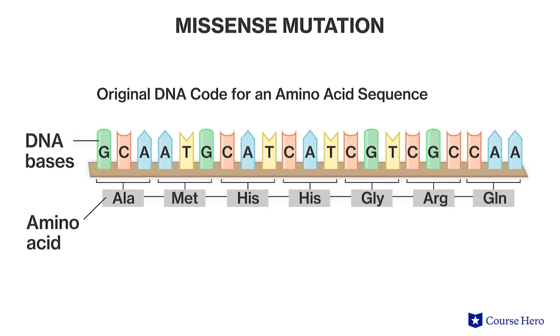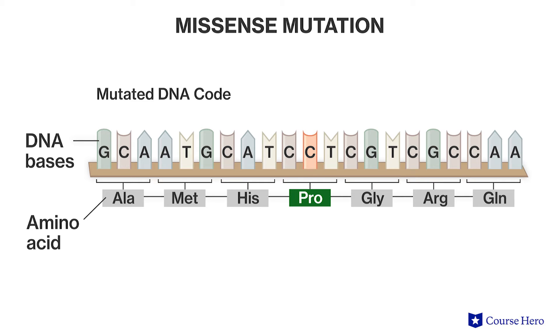As a result of base substitutions, several different outcomes can occur, depending on the effect these mutations have at the protein level. For example, in a missense mutation, one amino acid is substituted for another in a given protein. The histidine is replaced with a proline, and this may result in a defective protein.